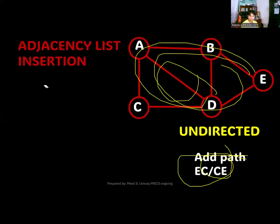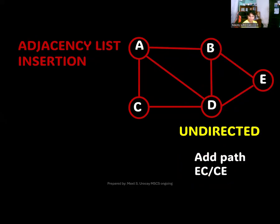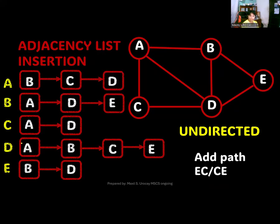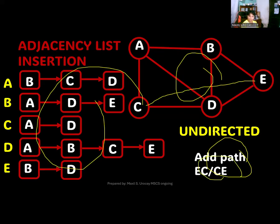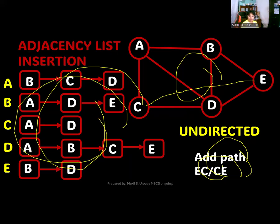I will not explain the adjacency list construction one by one since I discussed that already, so just backtrack to the previous video regarding the adjacency list. This will be the representation of the adjacency list for this particular graph. Since your goal is to insert the path from E to C — and since there is no direction in an undirected graph, E-C or C-E won't matter, both are allowed.